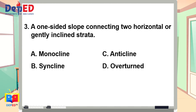Number three. A one-sided slope connecting two horizontal or gently inclined strata. A. Monocline. B. Syncline. C. Anticline. Or letter D. Overturned.